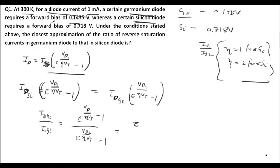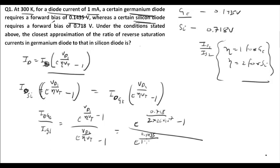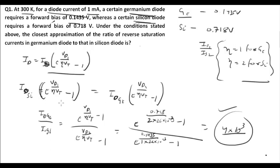Substituting the values: Vd1 = 0.718 V for silicon, η = 2, Vt = 26 mV. For germanium: Vd2 = 0.1435 V, η = 1, Vt = 26 mV. On solving this, we get a ratio of approximately 4 × 10³. This is how we attempt these types of questions.